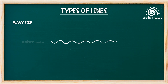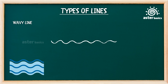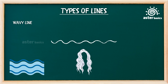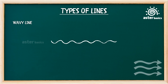Wavy line: soft, flowing waves curving up and down smoothly. Wavy lines are used to draw water, hair, or wind in drawings. Wavy lines move like a ribbon in the breeze — super calm and swishy, like a lullaby drawn on paper.